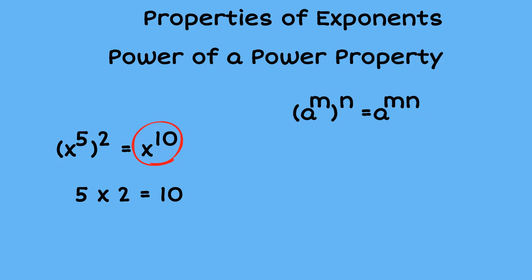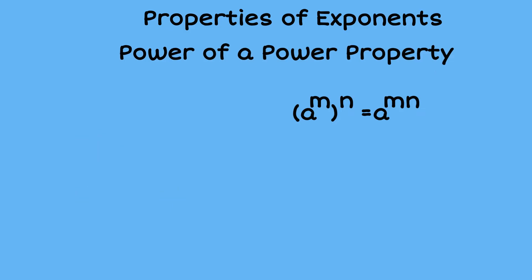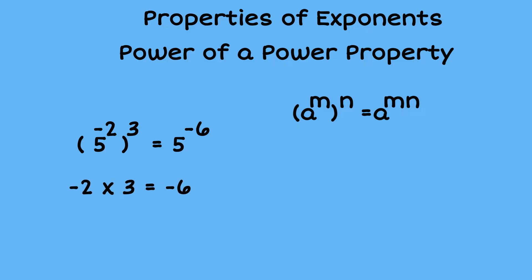A second example of that one would be five to the negative second, all raised to the third. Although the exponent is negative, we still multiply those two exponents together, and that gives us five to the negative sixth power.